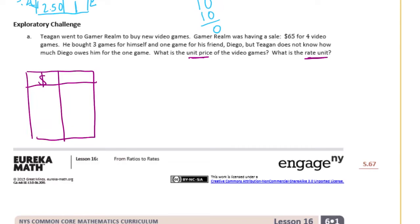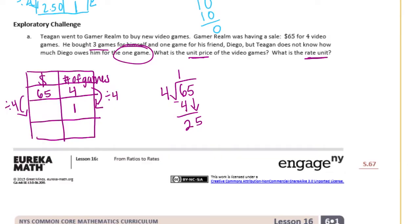So let's do price and number of games. So it's $65 for 4 games and 3 are for himself but he wants to know how much Diego owes him for 1 game. So we want to know how much it would cost for 1 game. So how can we get from 4 to 1? We need to divide by 4. So let's do the same thing to 65. 4 goes into 6 one time. Bring down the 5. 4 goes into 25. See 4 times 6 is 24 so it can go in 6 times. We're not done. I'm going to put a decimal point there and bring down a 0. 4 goes into 10. 2 times. That would be 8. Still not done so I'm going to add another 0. 4 goes into 20 five times. And now we finally don't have a remainder. So it would be $16.25 for 1 game.